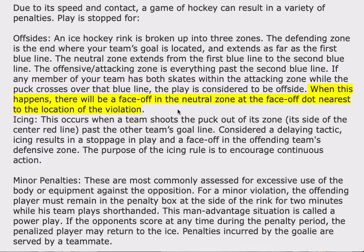When this happens, there will be a face-off in the neutral zone at the face-off dot nearest to the location of the violation. Icing occurs when a team shoots the puck out of its zone — its side of the center red line — past the other team's goal line. Considered a delaying tactic, icing results in a stoppage in play and a face-off in the offending team's defensive zone. The purpose of the icing rule is to encourage continuous action.